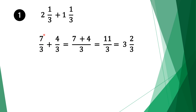Now we have normal adding fractions. We have the same denominator, so we take 3 as the common factor. 3 divided by 3 is 1, 1 times 7 is 7. Move along the plus sign. Do the same for the second fraction: 3 divided by 3 is 1, 1 times 4 is 4. We add 7 and 4 to get 11, and bring 3 as the denominator. So our result is 11 over 3, but this is an improper fraction.